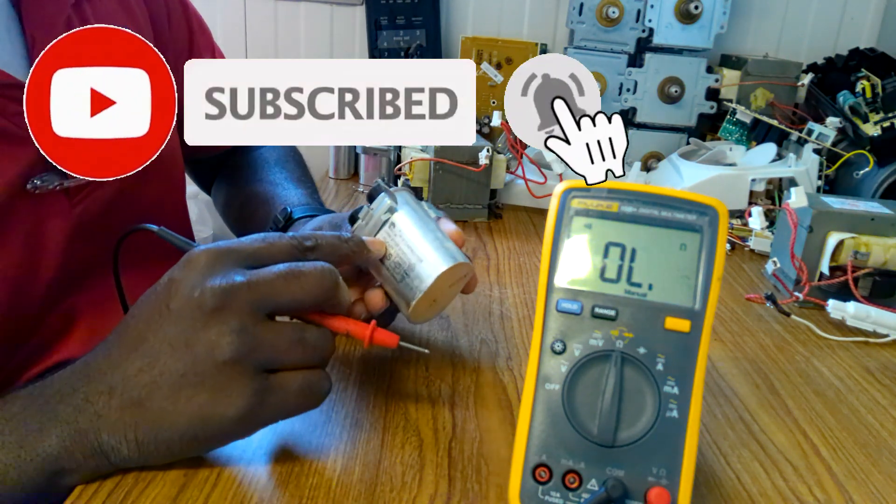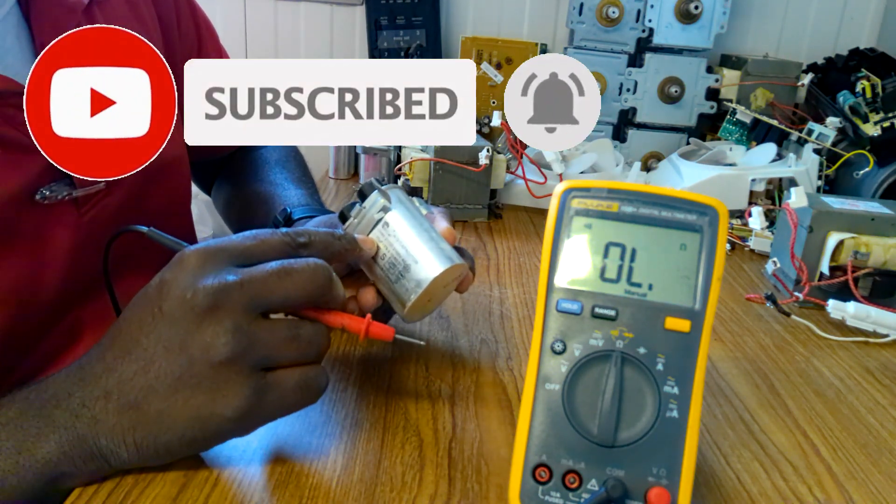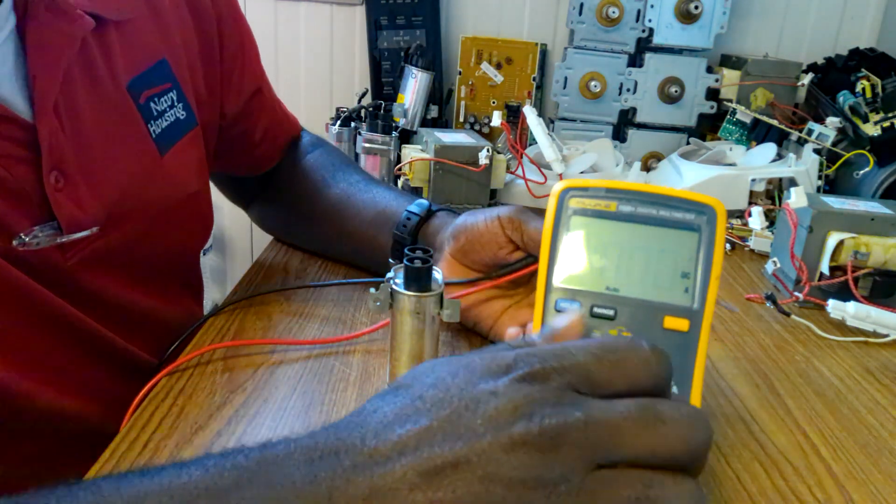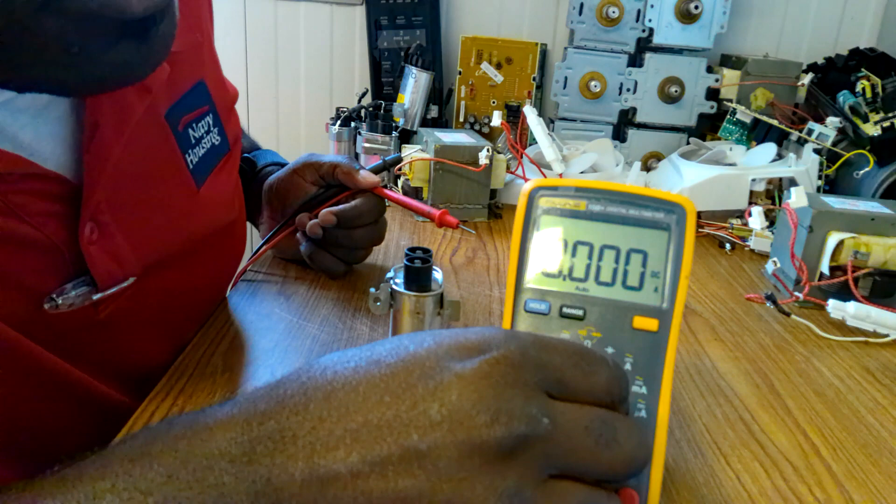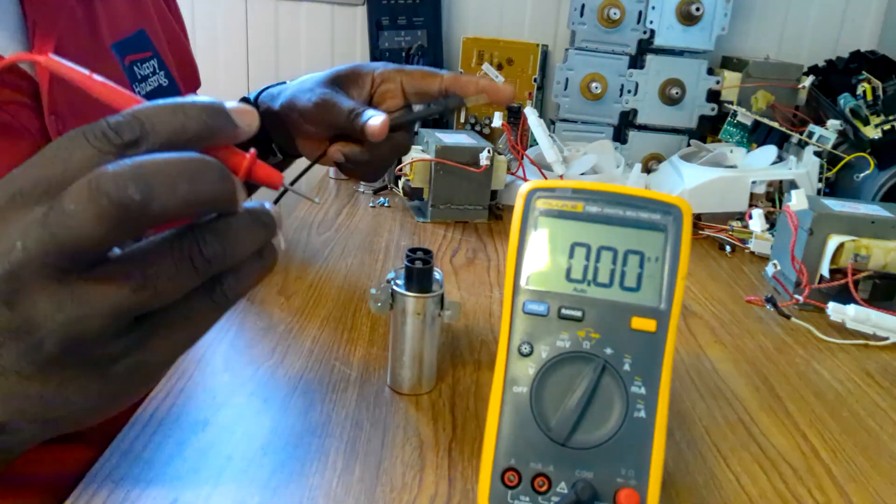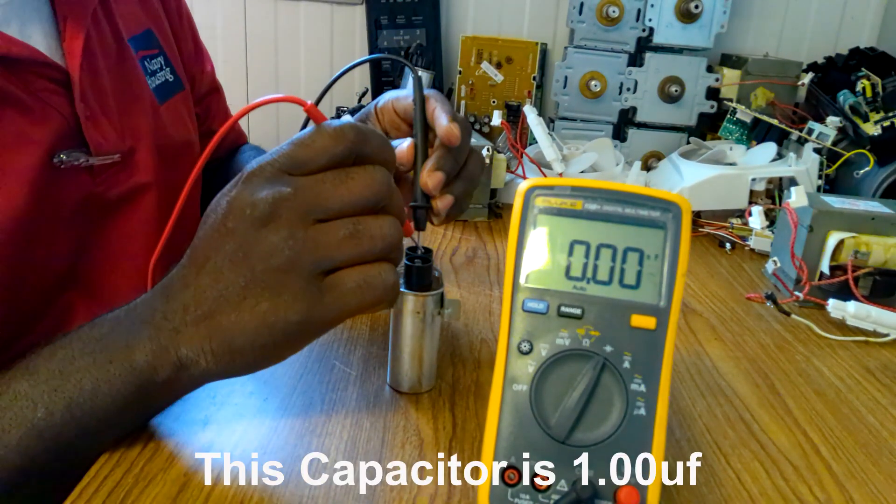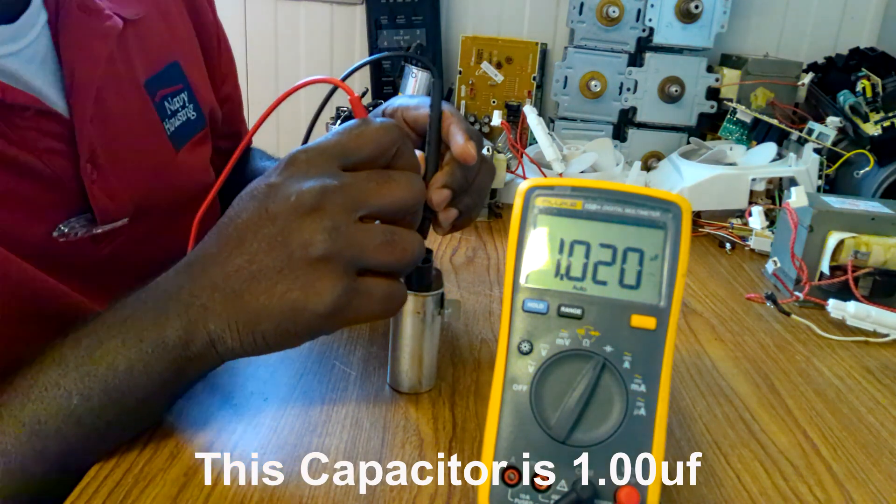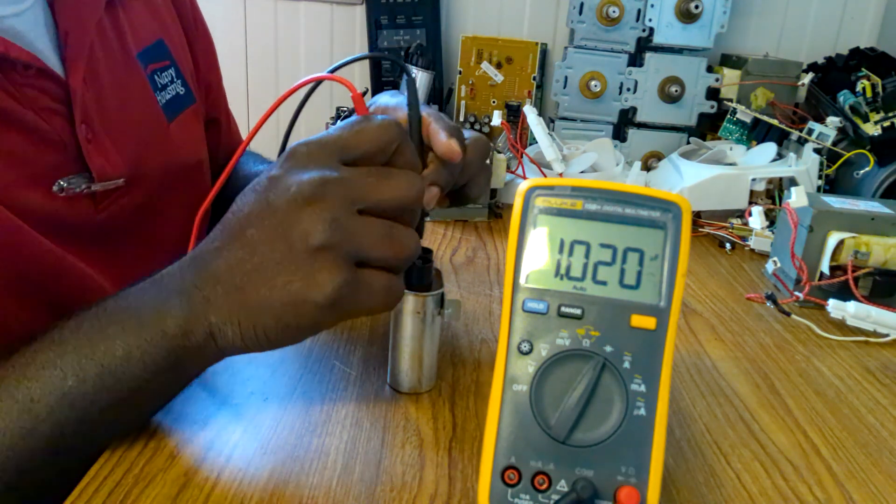Also, when you test it, you can use 1500 microfarads. Put it here. 150. Check it. 15020. That's okay.